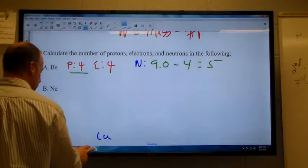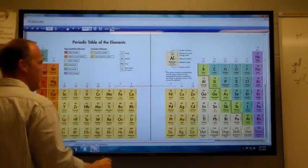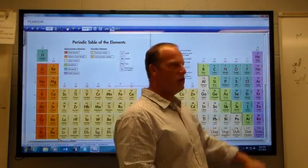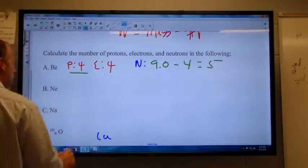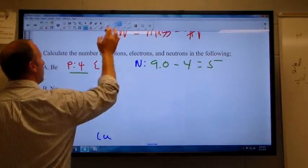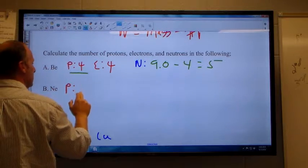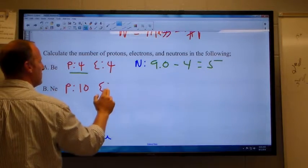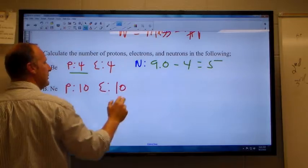All right, let's do Ne. Ne has two numbers, 10 and 20.2. And so the number of protons is the smaller number, 10. The number of electrons would be the same since it is a neutral atom.